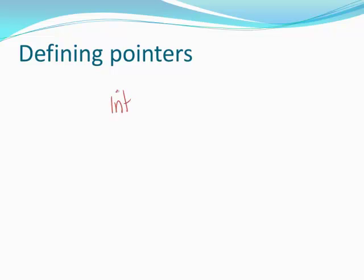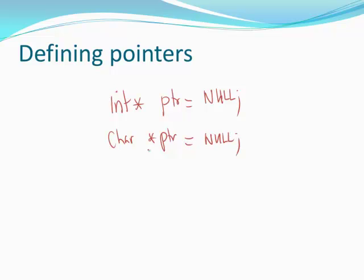Defining or declaring a pointer looks like this: you can define a pointer to an integer and initialize it to null, or define a pointer to a character and initialize that to null. Notice that the star can be written anywhere between the type and the variable name, and C will treat this as a pointer to that type. The memory allocated for a pointer variable itself is 32 bits, or four bytes, on a 32-bit address space machine — so int*, char*, or any pointer type takes 32 bits for the pointer variable itself.